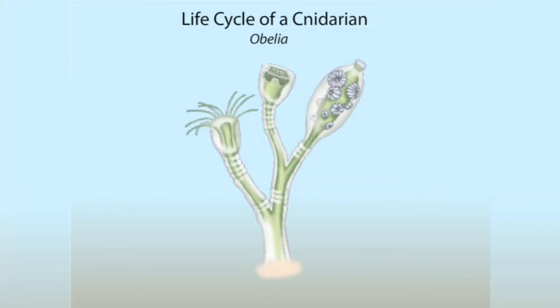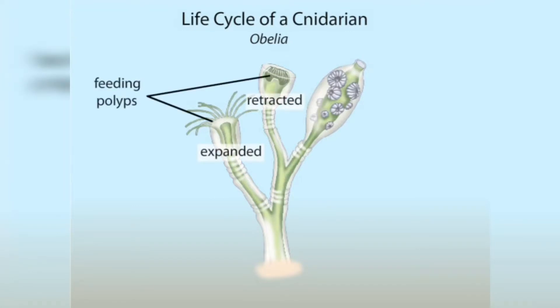In the Obelia colony, the polyps take on different functions. Some have stinging tentacles that are specialized for capturing prey and feeding, while others are specialized for reproduction.